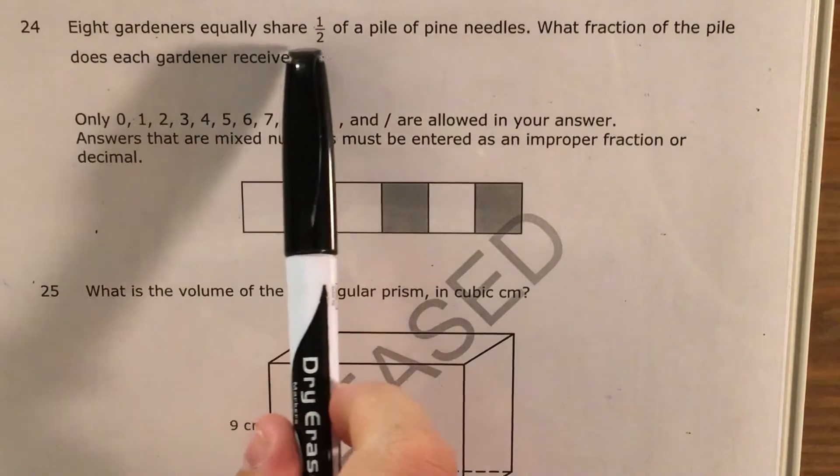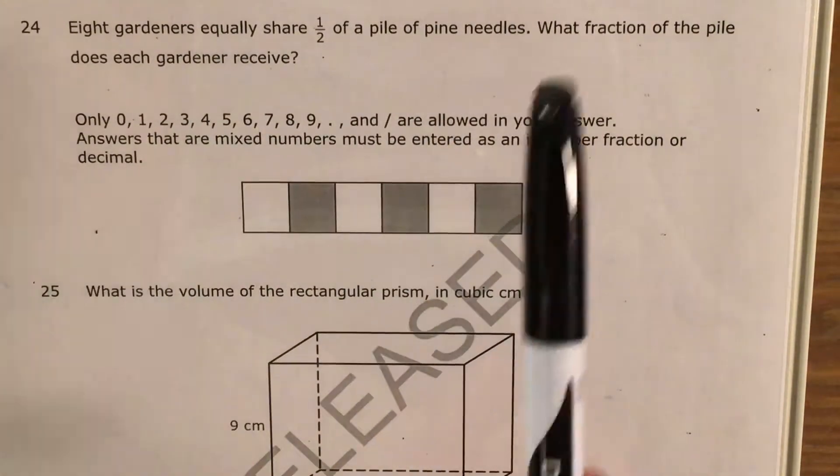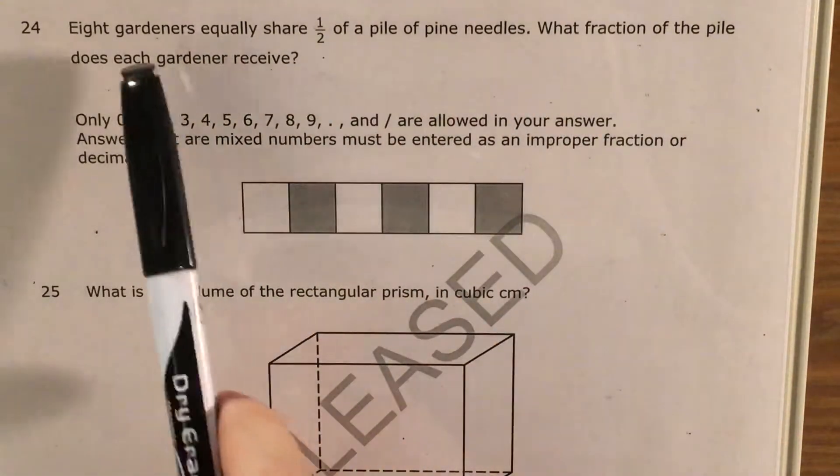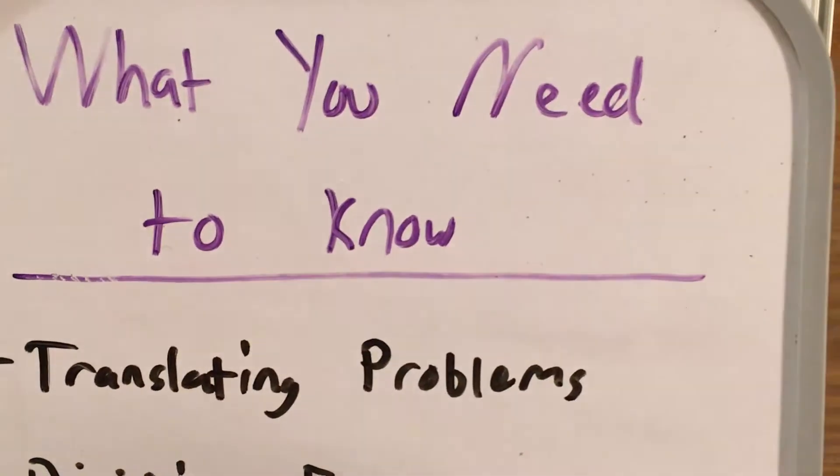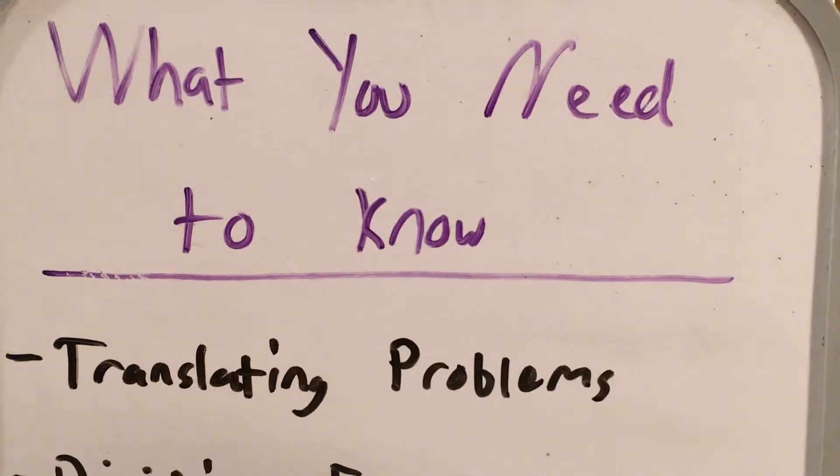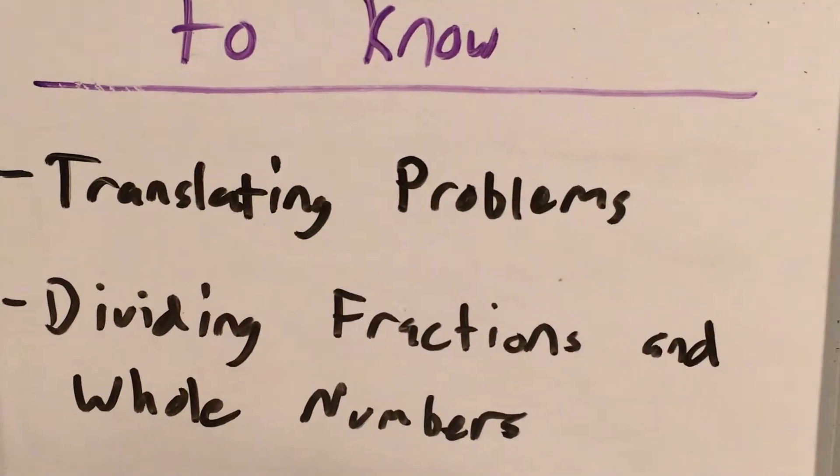We're being told that 8 gardeners equally share half of a pile of pine needles, and we're supposed to find out what fraction of that pile each gardener receives. To do well on a question like this, you'll need to know how to translate word problems and how to divide fractions and whole numbers.